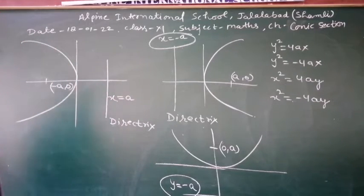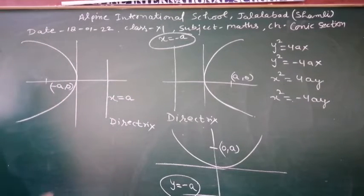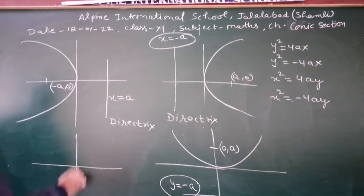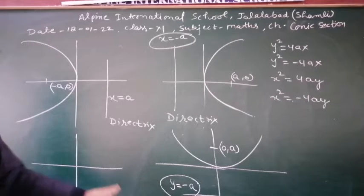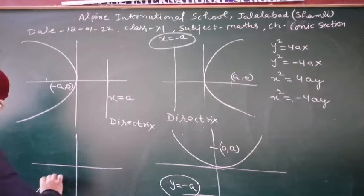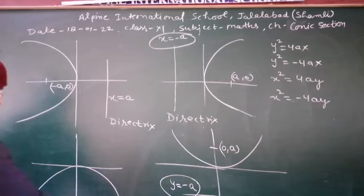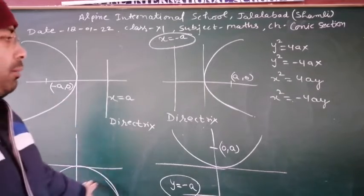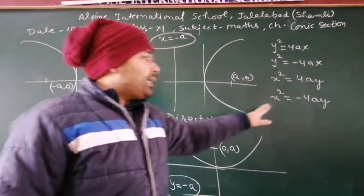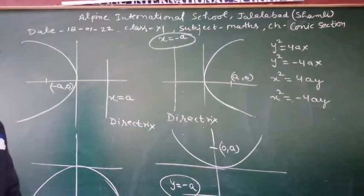The fourth type of parabola opens in the downward direction, below the origin. This is the last type of parabola, and the equation of this parabola is x² = −4ay.